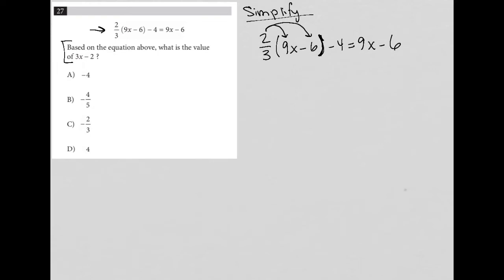So two-thirds of 9x is going to be equal to 6x. Two-thirds of negative 6 is going to be equal to negative 4. So 6x minus 4 minus 4 equals 9x minus 6.